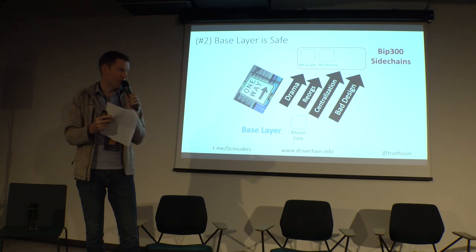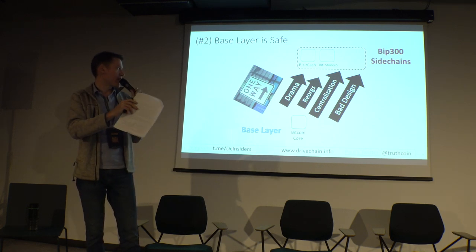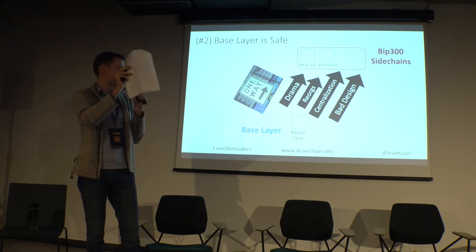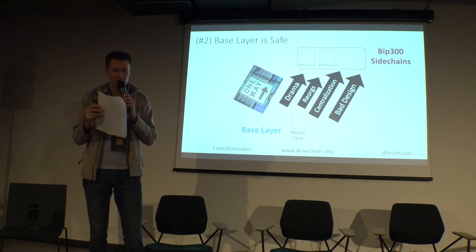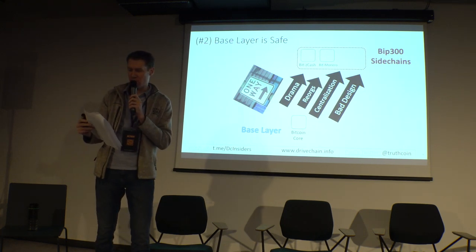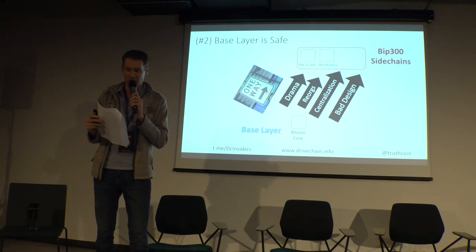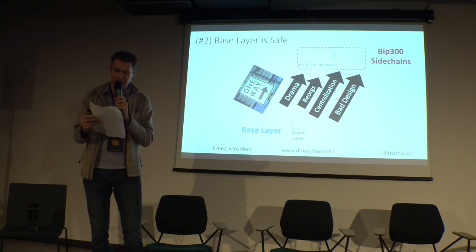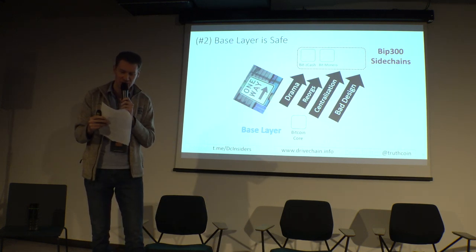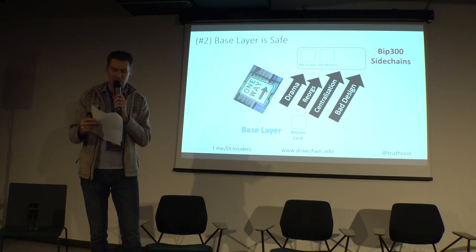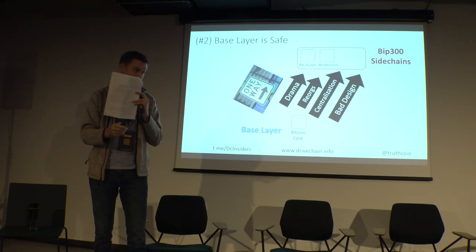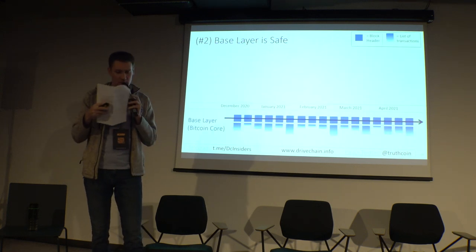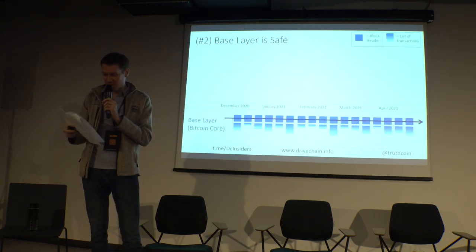The goal is that everything on the sidechain should be ignorable by layer one. Your Bitcoin Core layer one node should be unaffected by problems on the sidechain. Even under extreme adversarial conditions, where the sidechain is experiencing all sorts of chaos, layer one is just going to soldier on and ignore all of that. The drama can only go one way, and I'm going to try to explain how this works.